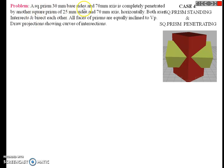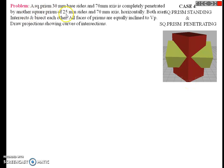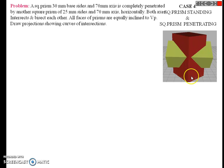The vertical square prism has a base side of 30 mm and an axis of 70 mm — so the total height of this vertical square prism is 70 mm. It is completely penetrated by another square prism with a 25 mm base side and 70 mm axis, oriented horizontally. This horizontal square prism has a base of 25 mm and an axis of 70 mm, and it completely penetrates the vertical square prism.